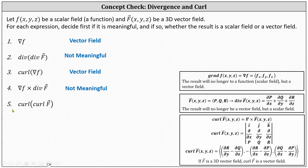Number five, we begin with the curl of the vector field F, which is another vector field, and then we want the curl of that vector field, which results in another vector field. Number five is meaningful — the result is a vector field. I hope you found this helpful.